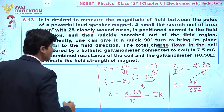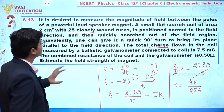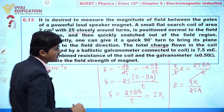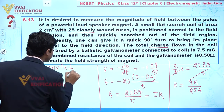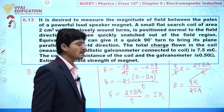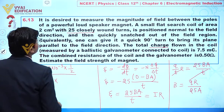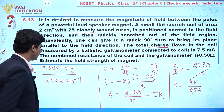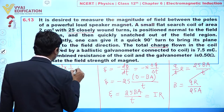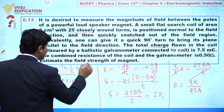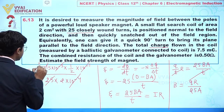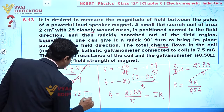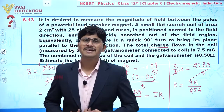Now substituting the values: Q is 7.5 millicoulomb, R is 0.5 ohm (which is 1/2), divided by 25 multiplied by A, where A is 2 centimeter square = 2 × 10⁻⁴ m². Simplifying, the powers of 10 cancel out, giving 3/4, which equals 0.75 tesla. So the value of the magnetic field is 0.75 T.